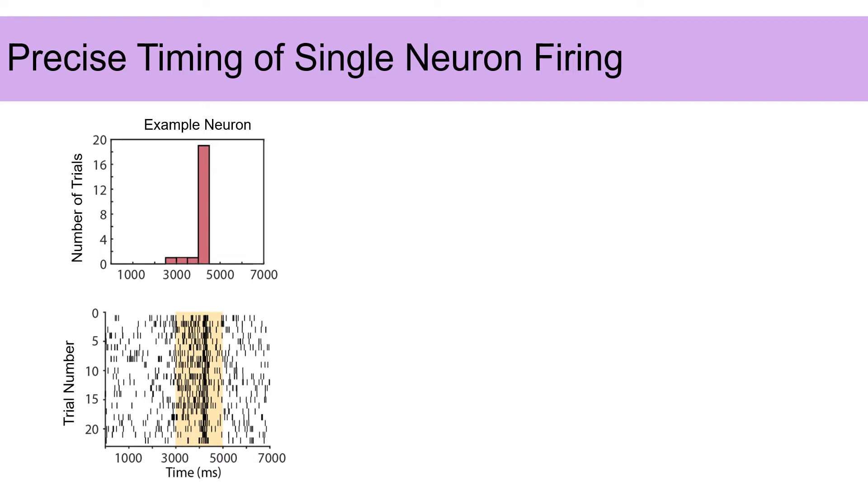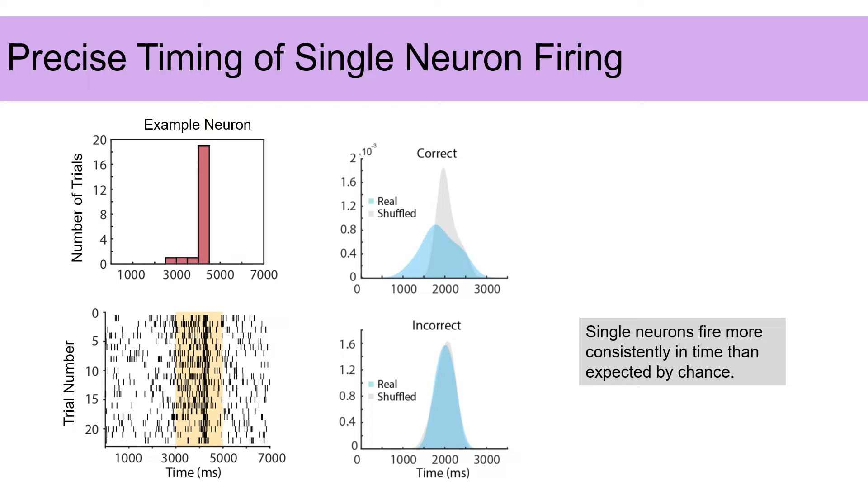We analyzed the responses of 7,116 isolated units. Many neurons displayed sharp bursts of action potentials occurring consistently in time between trials. For example, this neuron fires around the 4,000 millisecond mark in almost every trial for a certain target location. We can also calculate the standard deviation to see how consistently this neuron fires around this time.